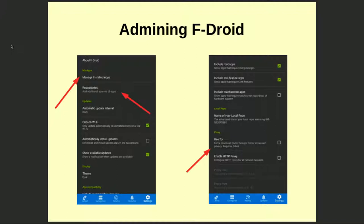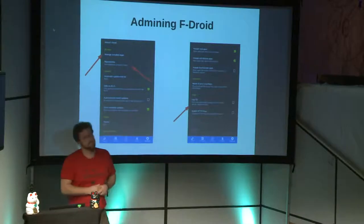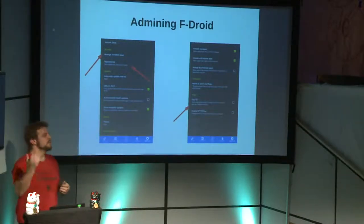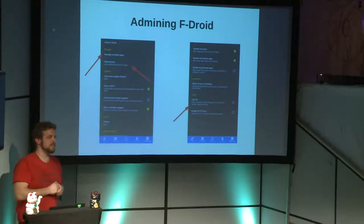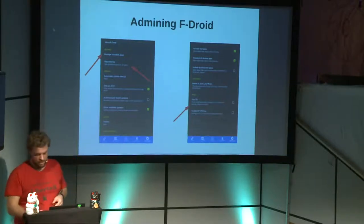F-Droid also has an administration interface with a lot of options. You can manage the apps you've installed via F-Droid and manage the repositories you use. I want to highlight that you can also use Tor services to connect to the repository — if you need advanced privacy and anonymity, you can use Tor with F-Droid.